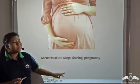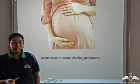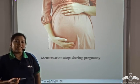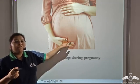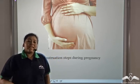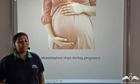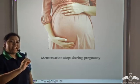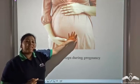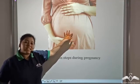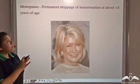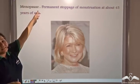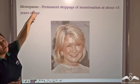Menstruation stops during pregnancy because menstruation is the discharge of the unfertilized egg along with the endometrial lining. If the female reproductive cell — the ovum — gets fertilized by a male reproductive cell known as the sperm in the oviduct, the fertilized ovum attaches to the endometrial lining in the uterus, so the lining is not shed and is maintained throughout pregnancy. The permanent stoppage of menstruation at about forty-five years of age is known as menopause — 'meno' comes from menstruation and 'pause' means to stop.